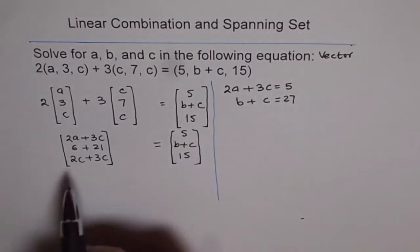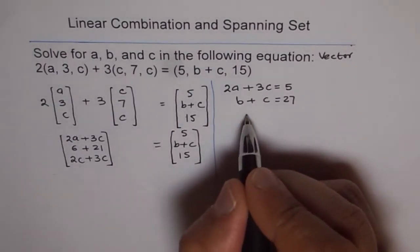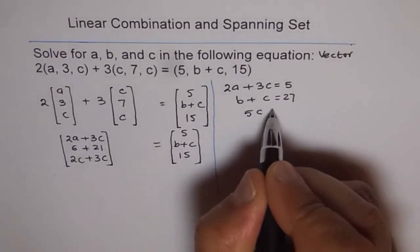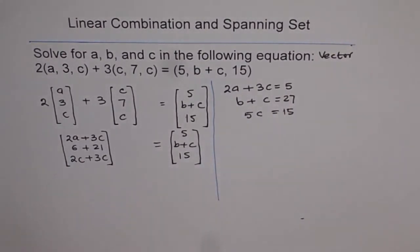The third one is 2c plus 3c, which is 5c, is 15. So, we have 5c equals to 15. These are the three equations to work with.